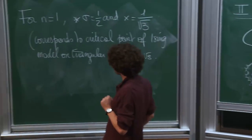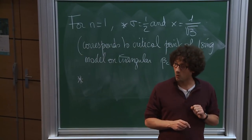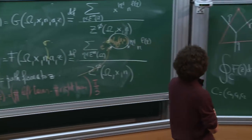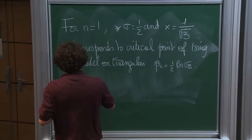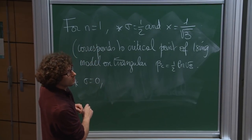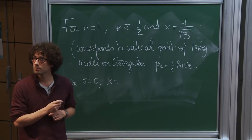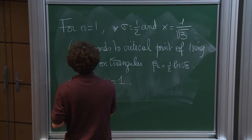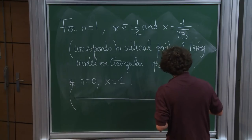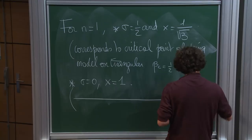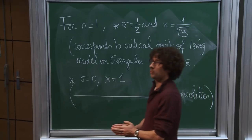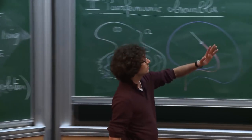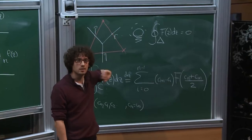For the second case of N equal 1, the second sigma turns out to give sigma equal 0, and the x associated to it is 1. That corresponds to the critical point of percolation — beta equals 0 exactly. So it's Bernoulli percolation. At least for N equal 1, the two special values correspond to two very classical models at their critical points. This is a very strong hint that this property has a connection to criticality of our models.